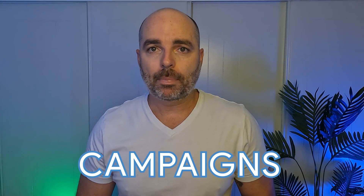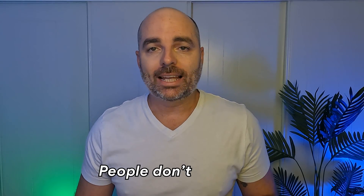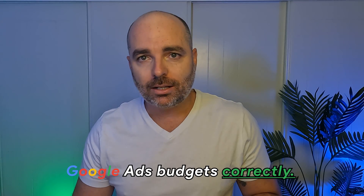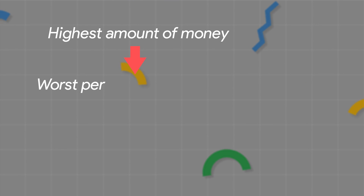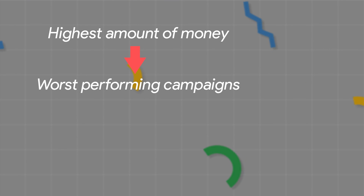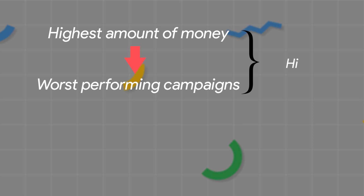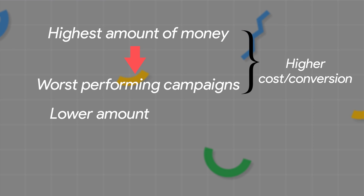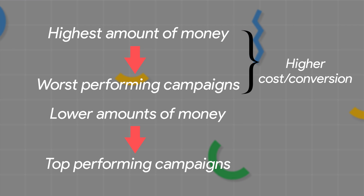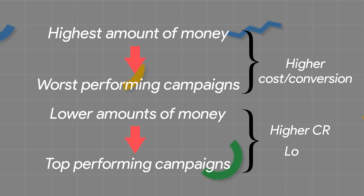A common big mistake in Google Ads campaigns is that people don't set their budgets correctly. Even worse, if you're running multiple campaigns, some people have their spending all out of whack — spending the highest amount of money in their worst performing campaigns with a higher cost per conversion, while spending lower amounts in their top performing campaigns with a higher conversion rate and a lower cost per conversion.